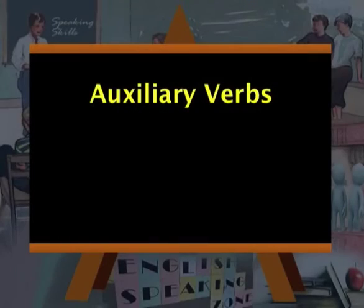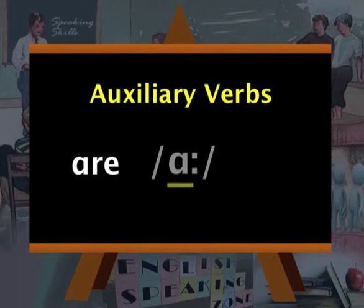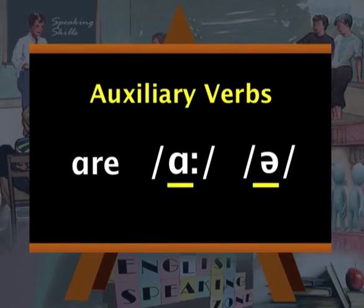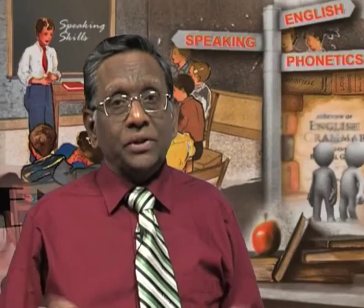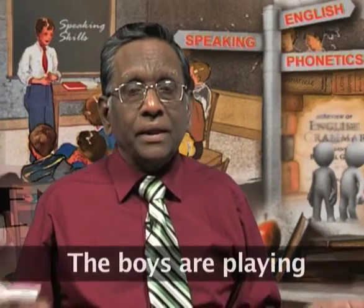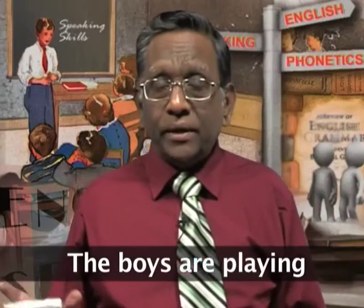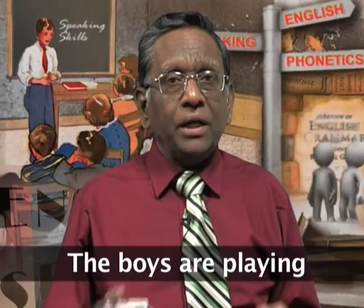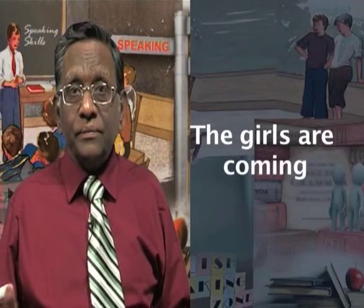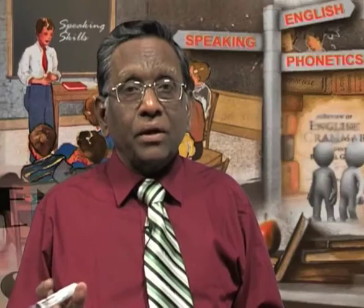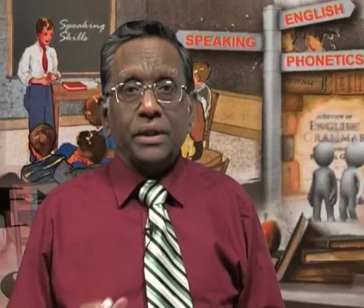Let us take up the next category of structural words — the auxiliary verb 'are.' The strong form is 'ARE' but the weak form is 'a.' In a sentence like 'the boys are playing,' the 'are' is pronounced simply as 'a' — 'the boys are playing.' It is not 'the boys ARE playing' but 'the boys are playing.' Similarly, 'the girls are coming' — 'are' is weakened to just 'a.'